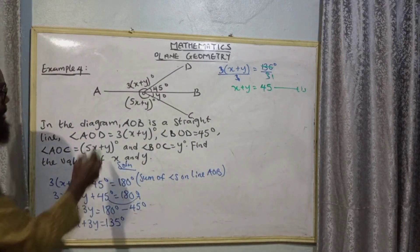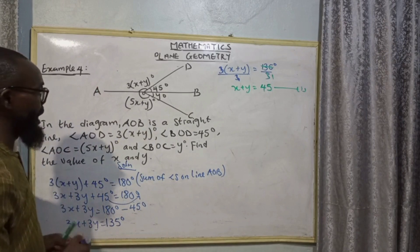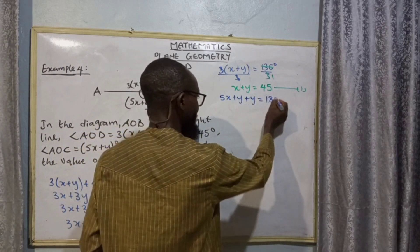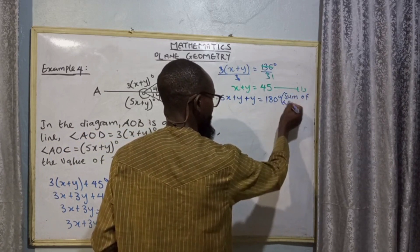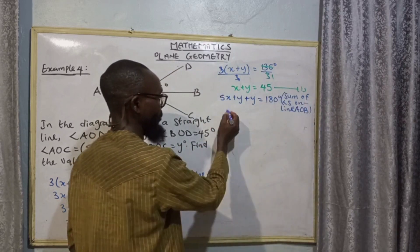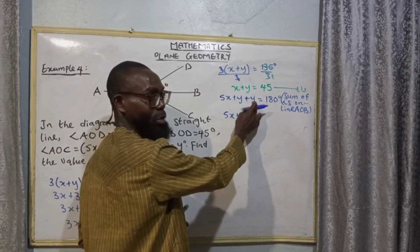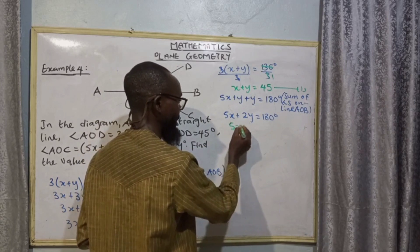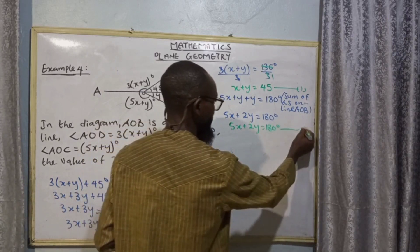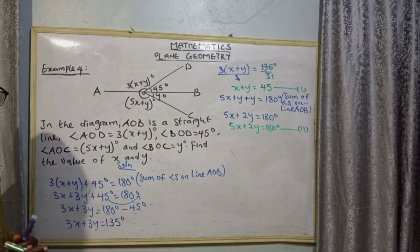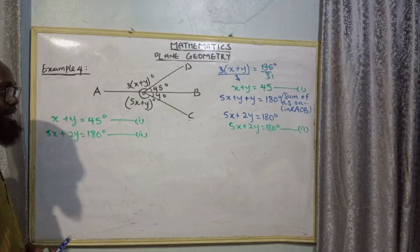Now, on the other side of line AOB, we have 5x + y + y = 180 degrees — sum of angles on line AOB. So 5x + 2y = 180 degrees; let's call this equation 2. It has now become a simultaneous equation. We have equation 1: x + y = 45, and equation 2: 5x + 2y = 180.